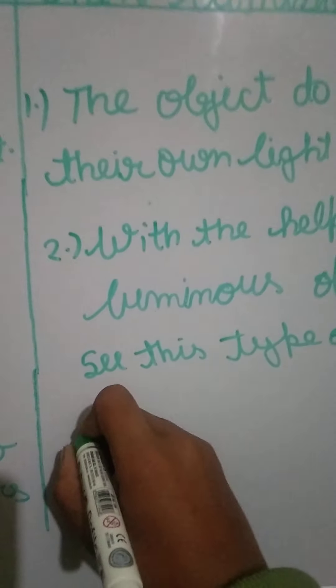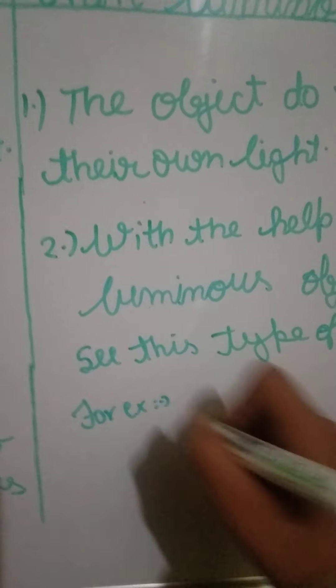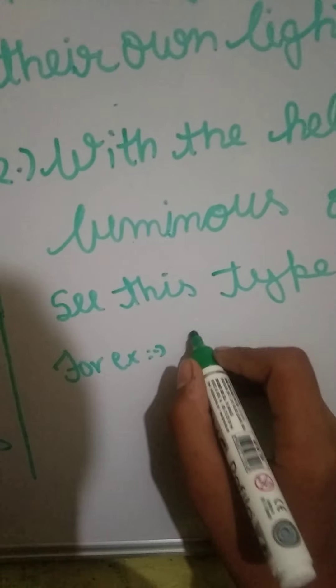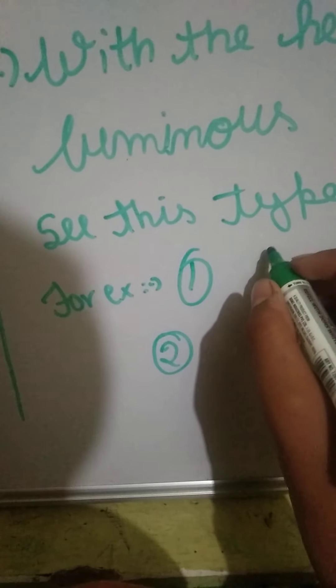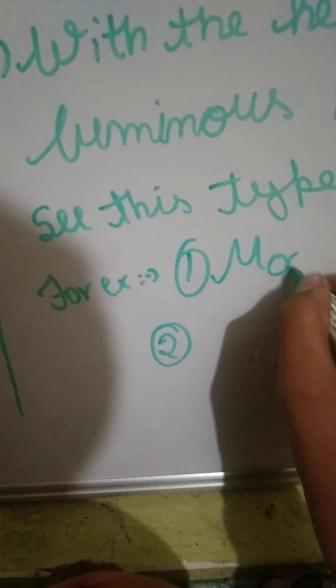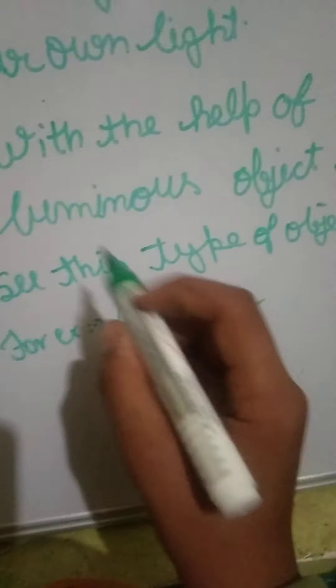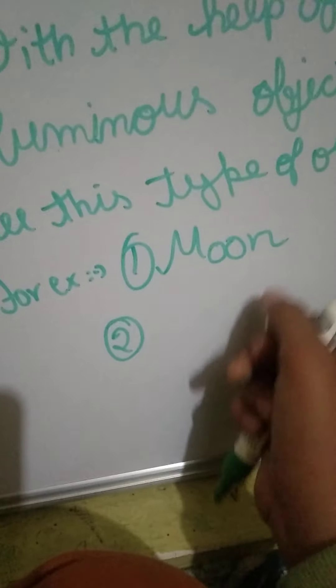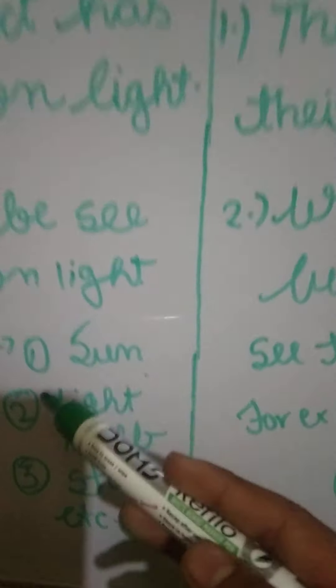For example, we can take any two examples. First example: the moon. If the sun is not there, then we cannot see the moon, because we can see the moon only with the help of the sun. The sun is a luminous object, so we see the moon with the help of a luminous object.